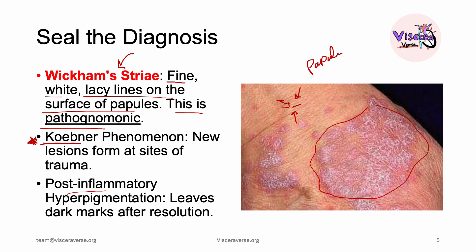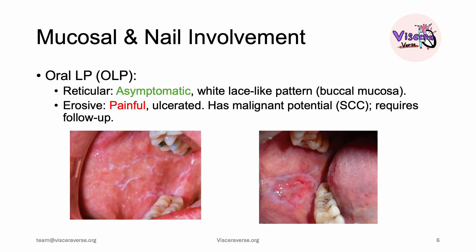Post-inflammatory hyperpigmentation: these lesions will leave dark marks after resolution. As we discussed at the beginning of the lecture, lichen planus affects not only the skin but also the mucosa.